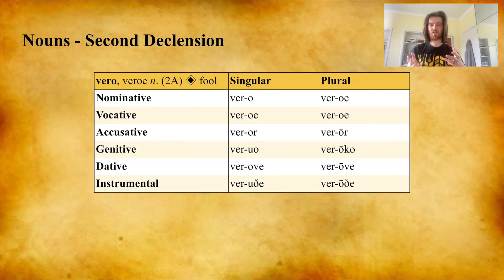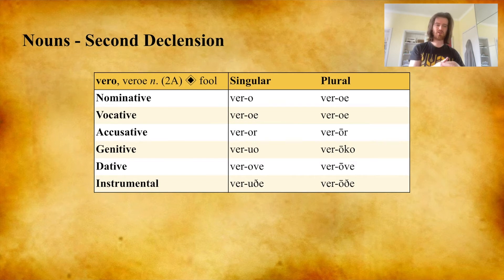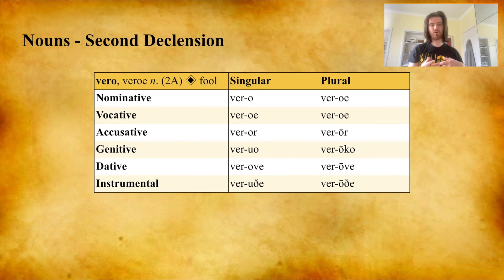Let's move on to the second declension. For vero, meaning full, with the nominative plural veroe, we have in the singular: nominative vero, vocative veroe, accusative veror, genitive veruo, dative verove, instrumental verode. In the plural: nominative veroe, vocative veroe, accusative veror, genitive verooko, dative verove, instrumental verove. In the plural, most of the forms other than the nominative and vocative have a long o — that's how you can easily recognize them.